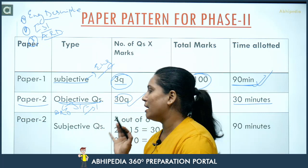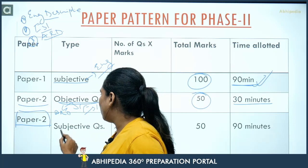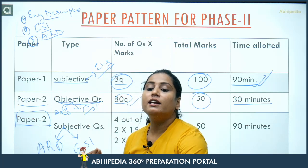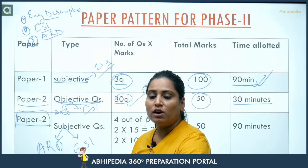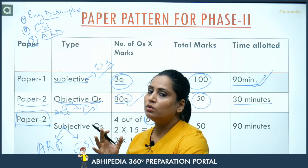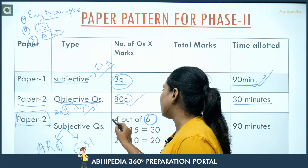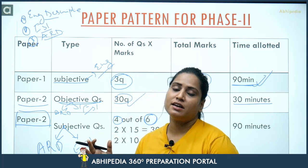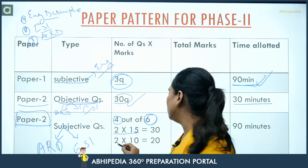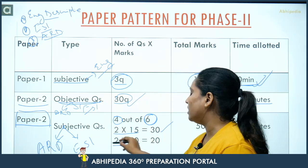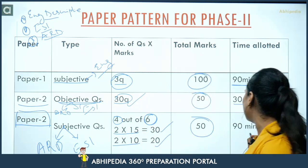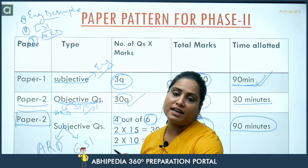Sab se most important thing jo aaj main aapko bataungi — that is Paper 2 ke baare mein, subjective questions for ARD and ESI. Subjective questions mein dono subjects involved hain. Total 6 questions aapko diye jayenge — 2 questions 15 marks ke, 2 questions 10 marks ke, aur 2 additional. 6 mein se aapko 4 questions attempt karne hain — 2 of 15 marks aur 2 of 10 marks. Toh 15 into 2 = 30, aur 10 ke 2 = 20, so total marks 50. Total time allot kiya gaya hai 90 minutes aapko, to complete your paper.